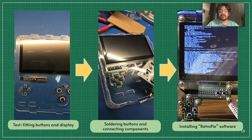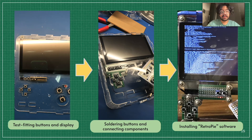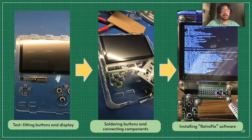This iterative process of prototyping continues. Here we can see test-fitting the buttons and display to make sure they fit inside the shell. As mentioned, the first shell did not fit properly, so I had to create a second version, which you see here. After everything fits, I placed them on the perf board and made sure those fit as well. Once those fit, I soldered the buttons and connected the components to the Raspberry Pi and the display. Once that was working, I installed the RetroPie video game emulation station software so that we could play retro video games on this Raspberry Pi machine.